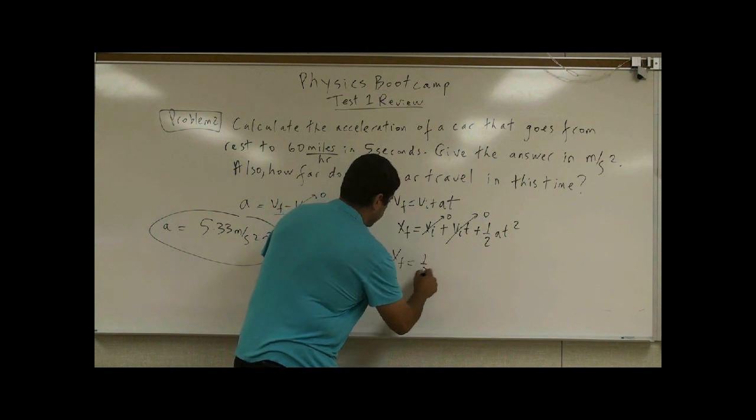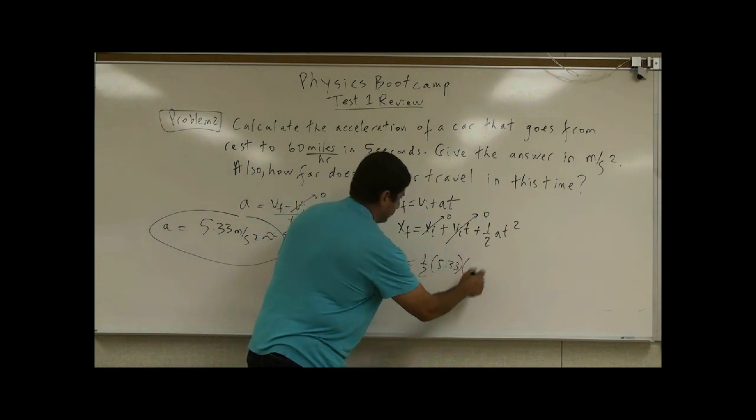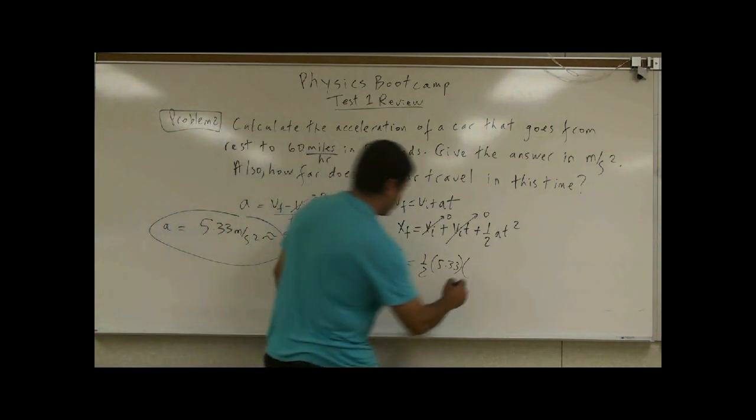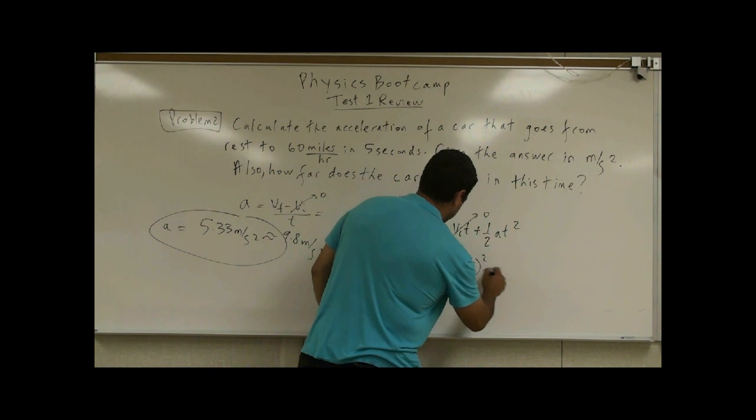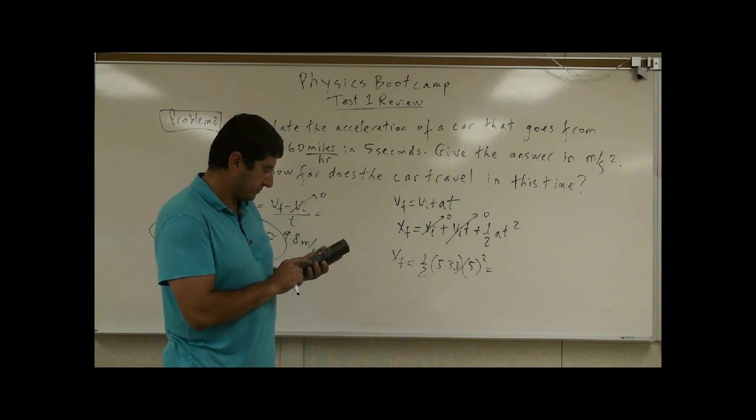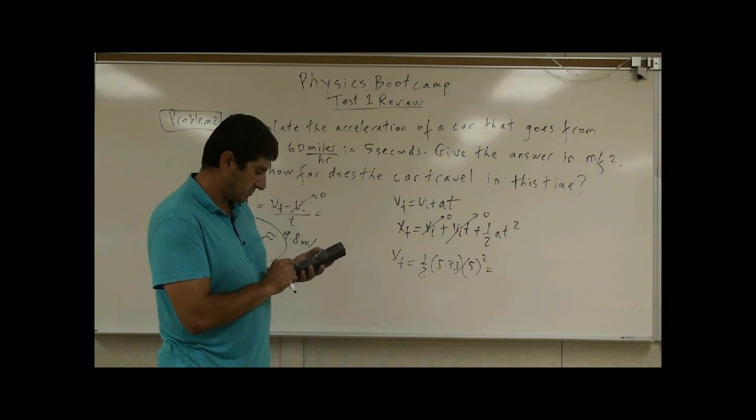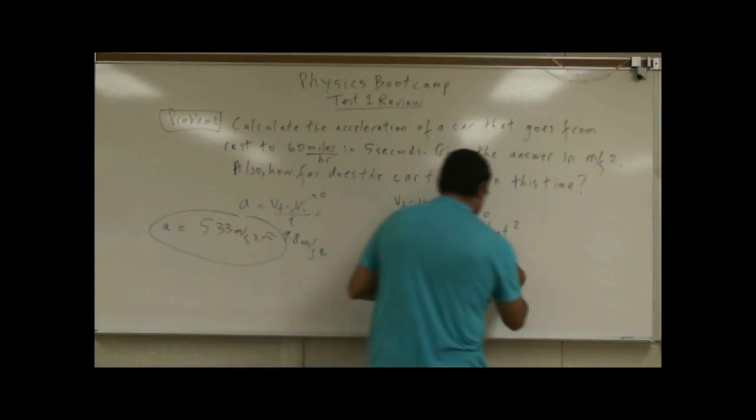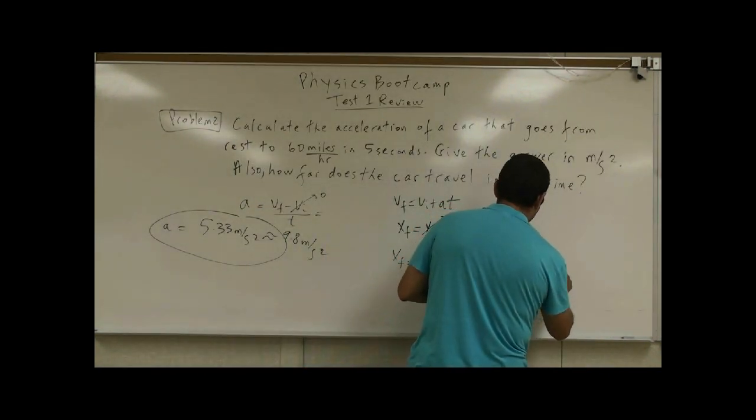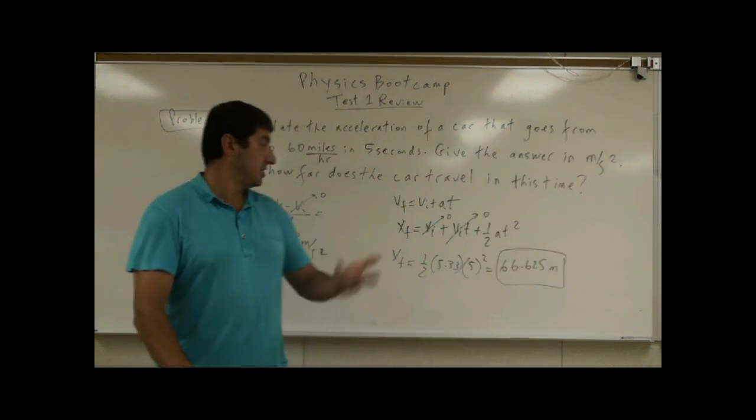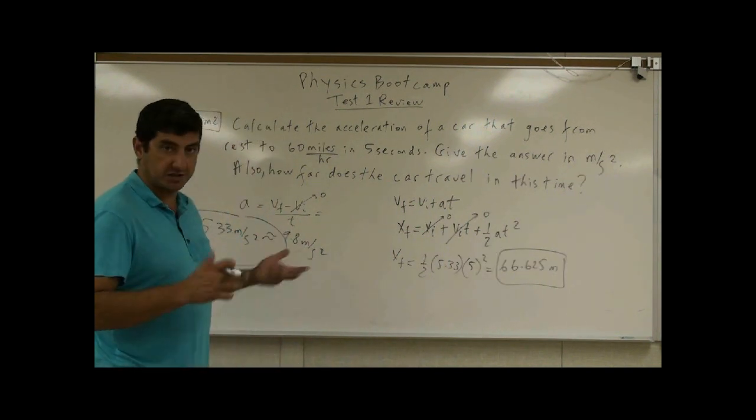So x final equals half of 5.33 times t squared. The time we already knew is five seconds. So you do that. Half 5.33 times 5 squared. And the answer we get is 66.625 meters. So during that time, the person will have covered 66.625 meters distance.